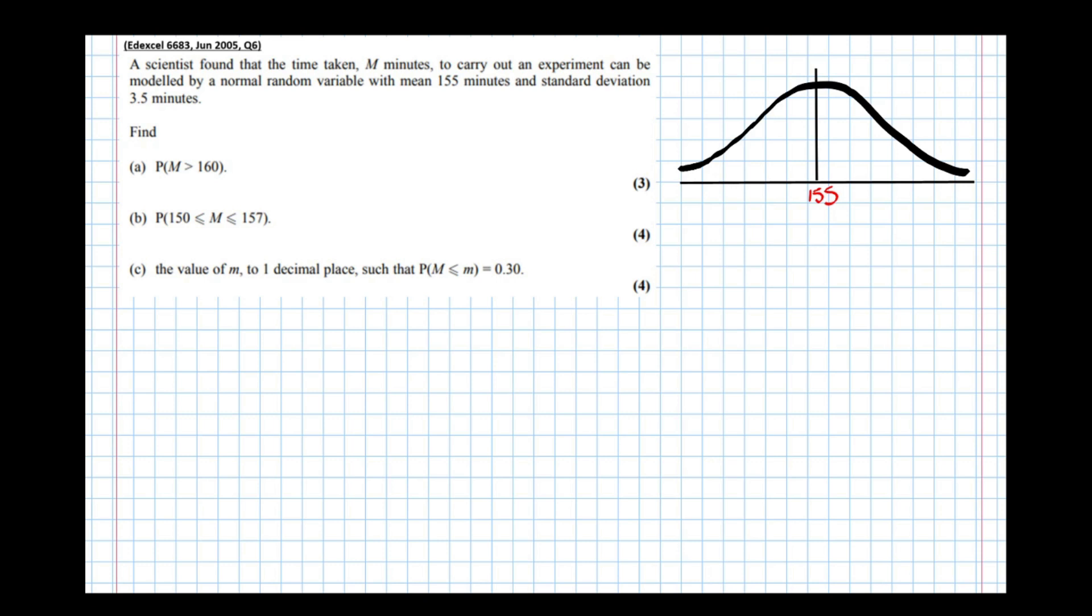Let's have a look at the question now. It says find the probability that M is greater than 160. Find the probability that the time taken to complete the experiment was more than 160. It's actually the area under the graph that represents probability. So for probability that M is bigger than 160, what we need to do is find the area from 160 upwards.